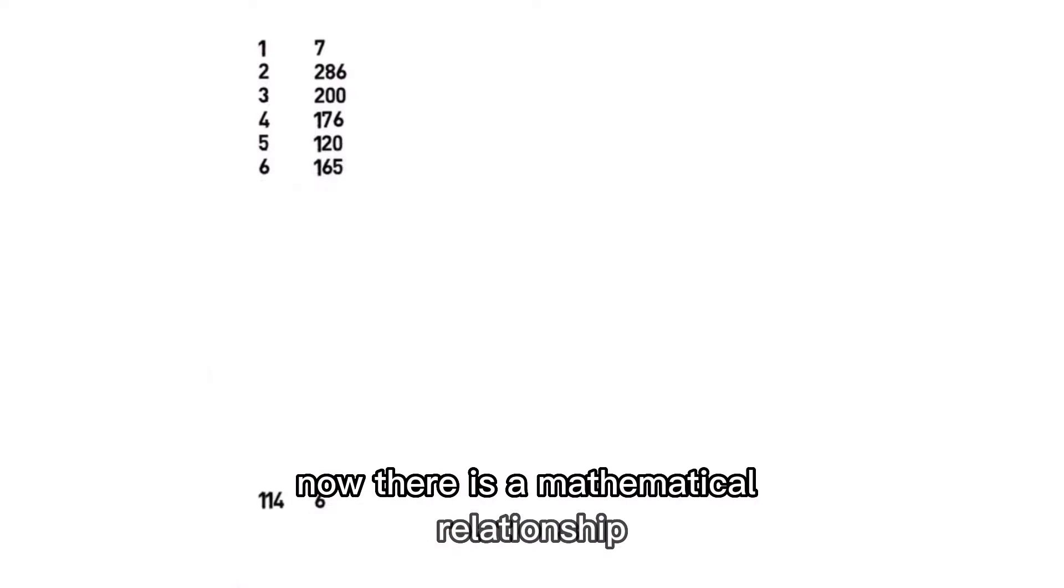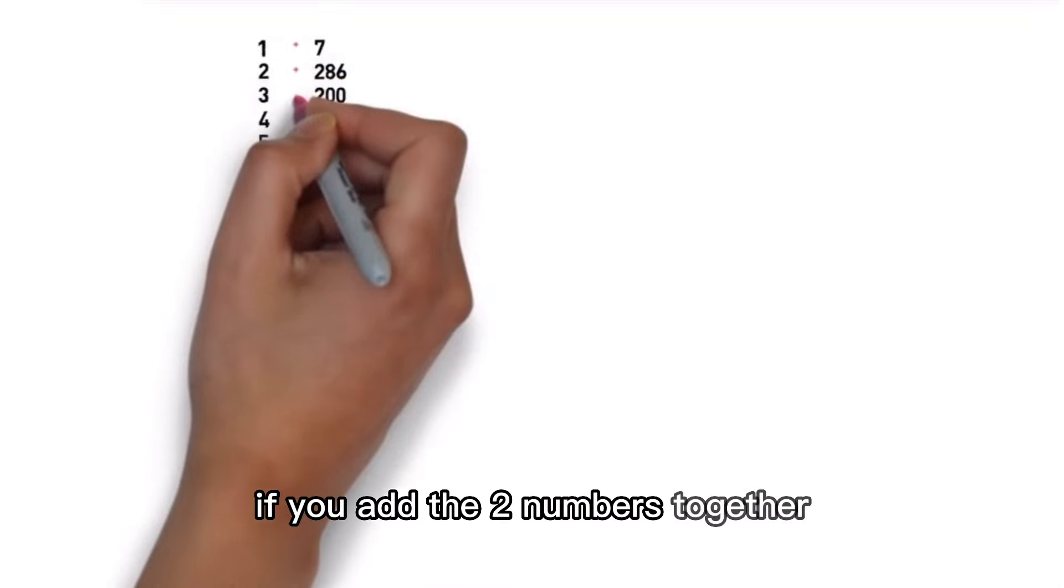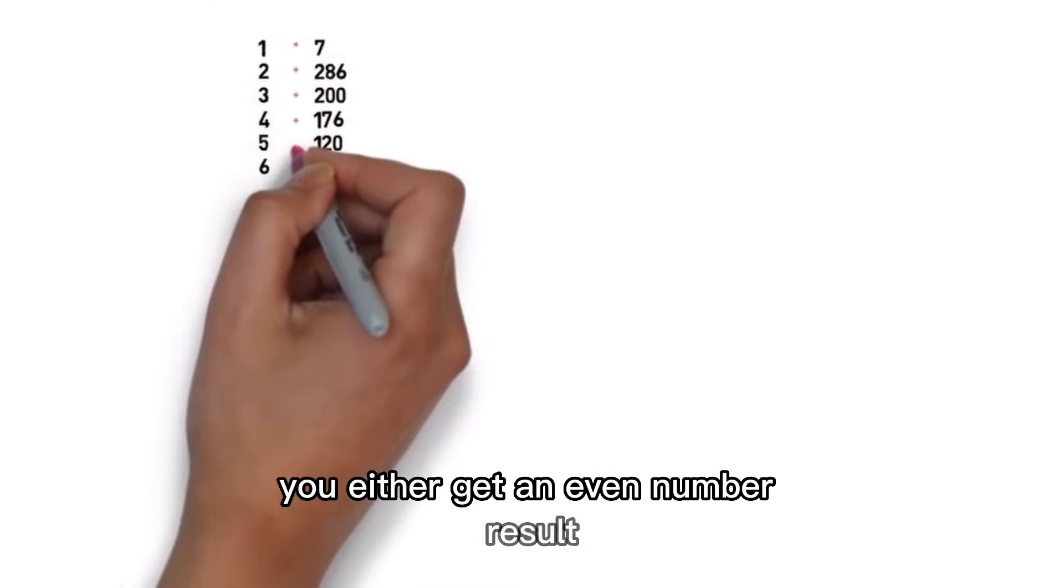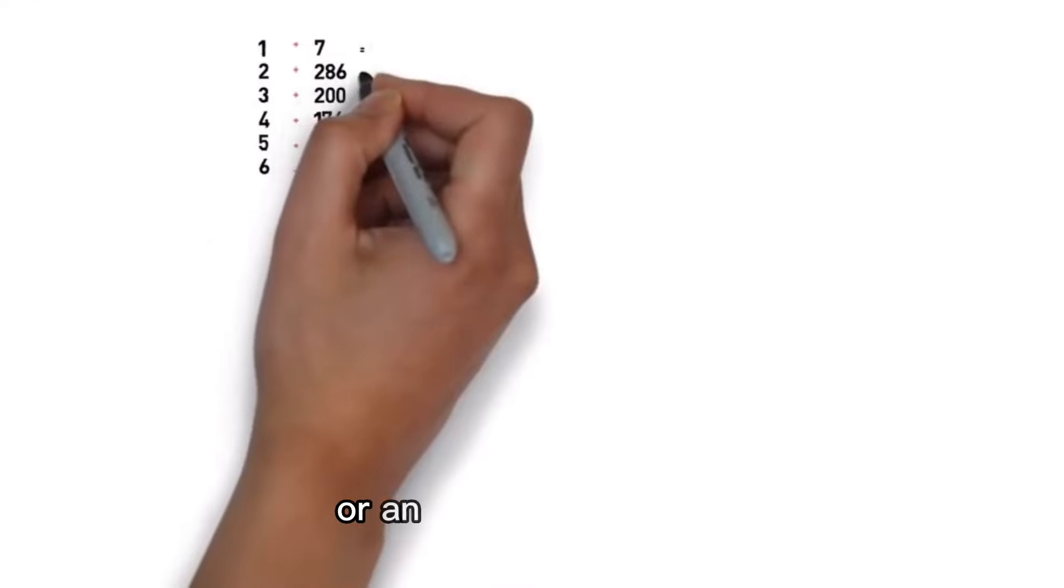Now there is a mathematical relationship between these two numbers. If you add the two numbers together, you either get an even number result or an odd number result. That's elementary.